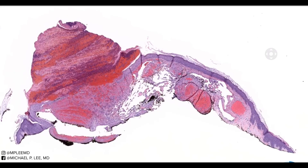Good morning, this is Dr. Lee with another episode of DermPath Made Easy. Today we have a Masson's tumor. Another name for Masson's tumor is intravascular papillary endothelial hyperplasia. So you would expect to see something within a blood vessel — intravascular — papillary, which is the shape of the lesion, and endothelial hyperplasia. Endothelial cells are the lining of blood vessels, or the cell type that lines blood vessels, and we'll be able to see all those constituents in this lesion today.